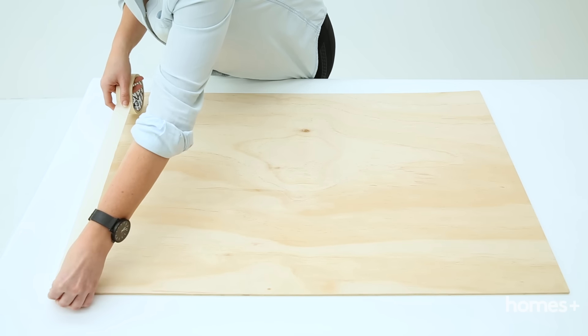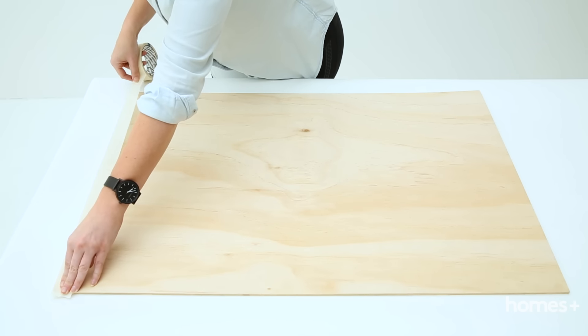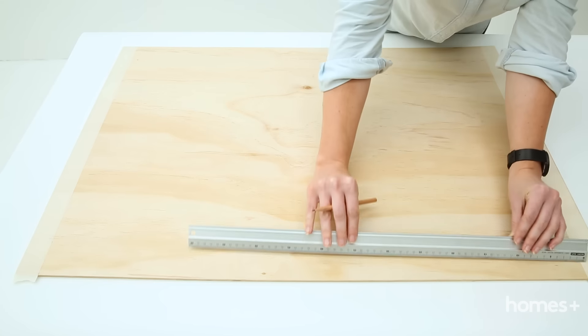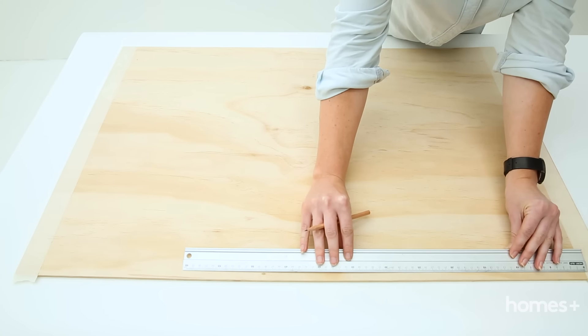Start by sticking a strip of tape along the top and bottom edges of your board. Use your ruler to divide your board into quadrants, marking them with your pencil. Then divide each of your quadrants into four equal squares so you have a grid.